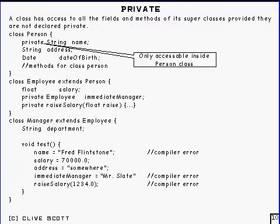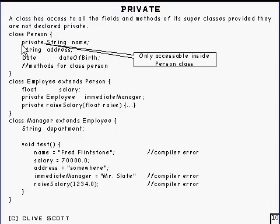This is about private. Private restricts access so that you can only access it within the class itself. There are other options that can go there instead of private — there's public and protected — but we cover those when we do packages and interfaces, which is a bit later. The effect is that the compiler will complain if you try to do certain things.